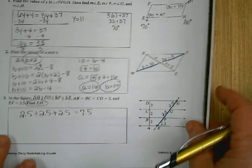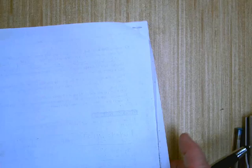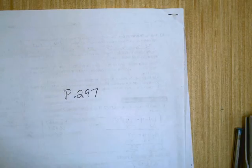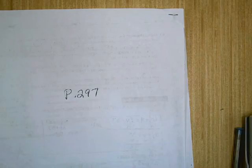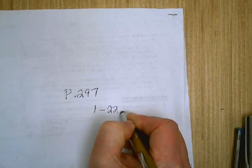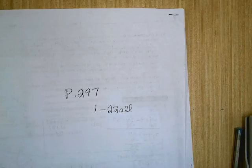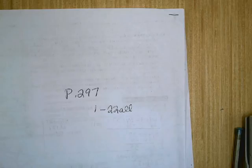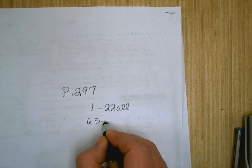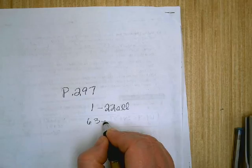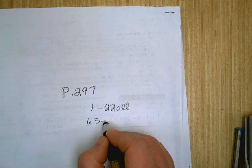So in your textbook, page 297. We can do 1 through 22, all. 63 through 66, all.